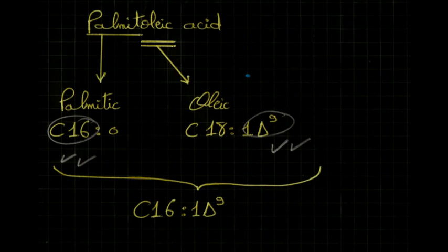Moving to the next one, palmitoleic acid. Sliced into two parts, it gives us palmitic meaning we got 16 carbons, and oleic meaning we got one unsaturation on the ninth carbon. That's how we get the common abbreviation C16:1 Δ9.